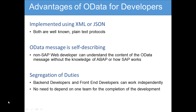This is a smart move by SAP. Since we are not only depending on ABAPers, we can make use of the resources which are plenty available outside to develop our interfaces where we can communicate with OData. Now the second one — the OData message is self-describing. This means that any non-SAP web developer can understand the content of the OData message even without knowledge of ABAP or any knowledge of SAP.